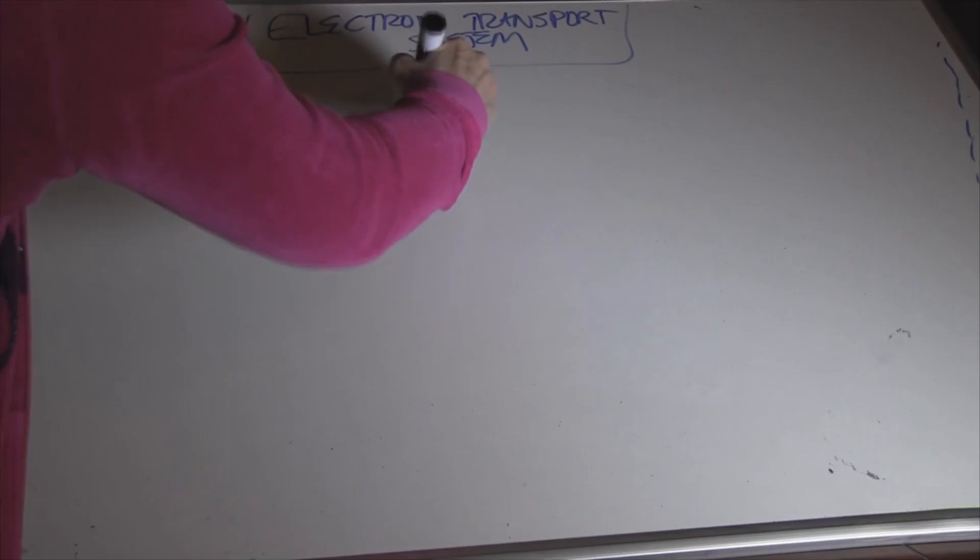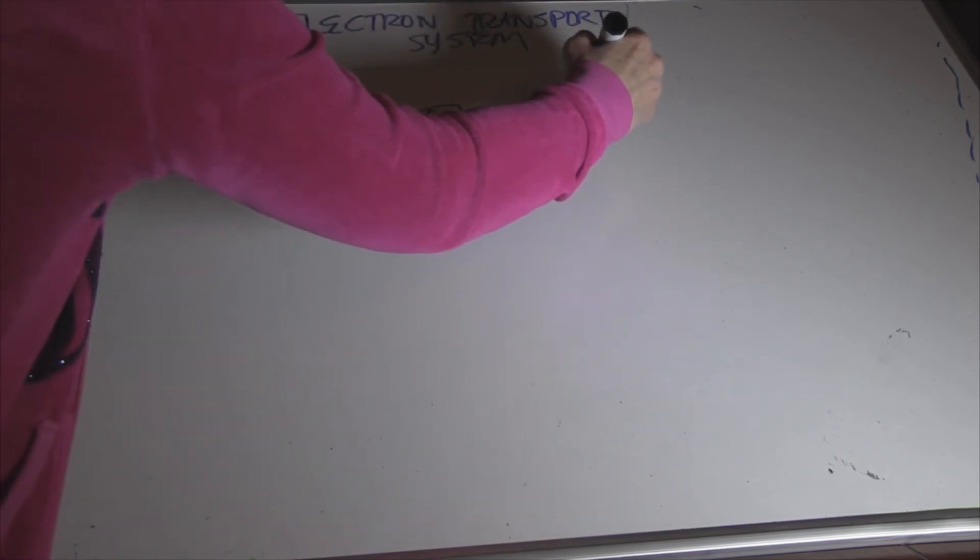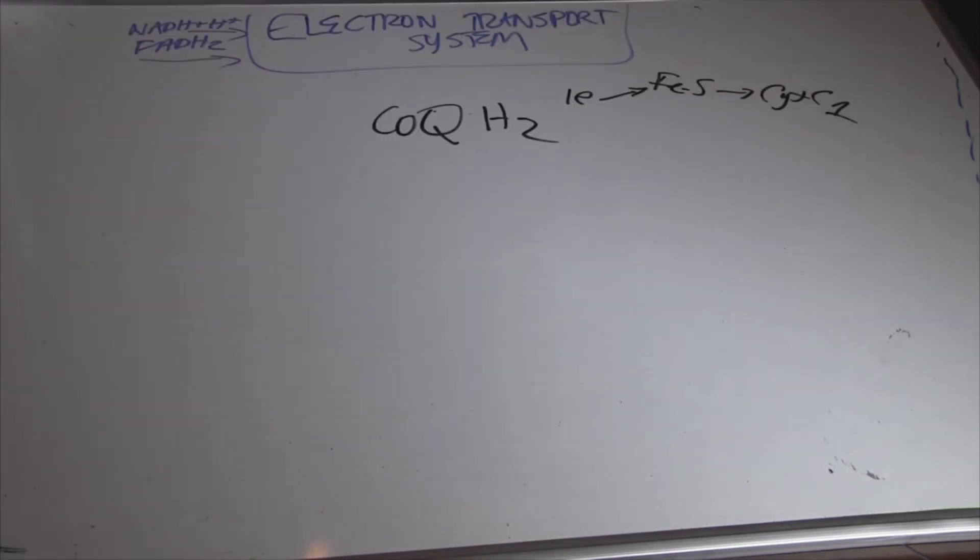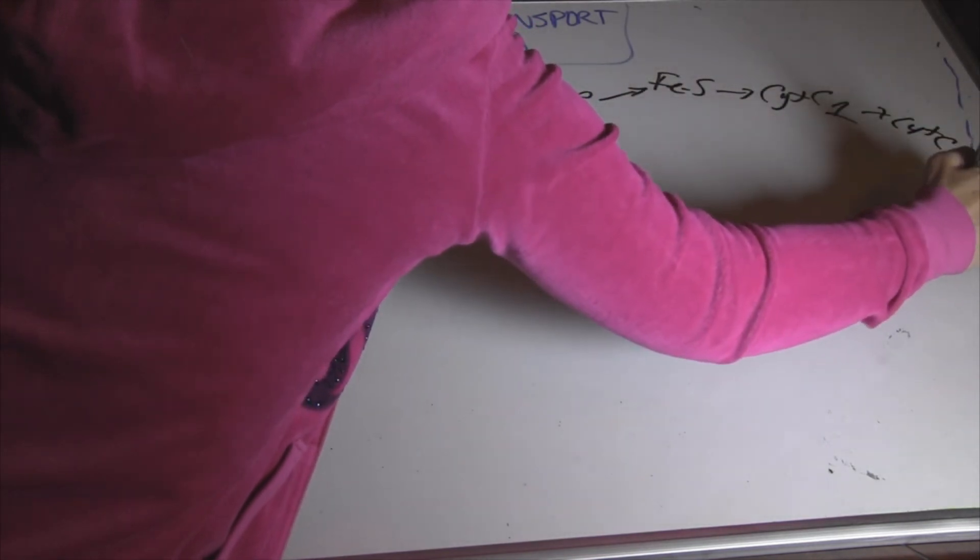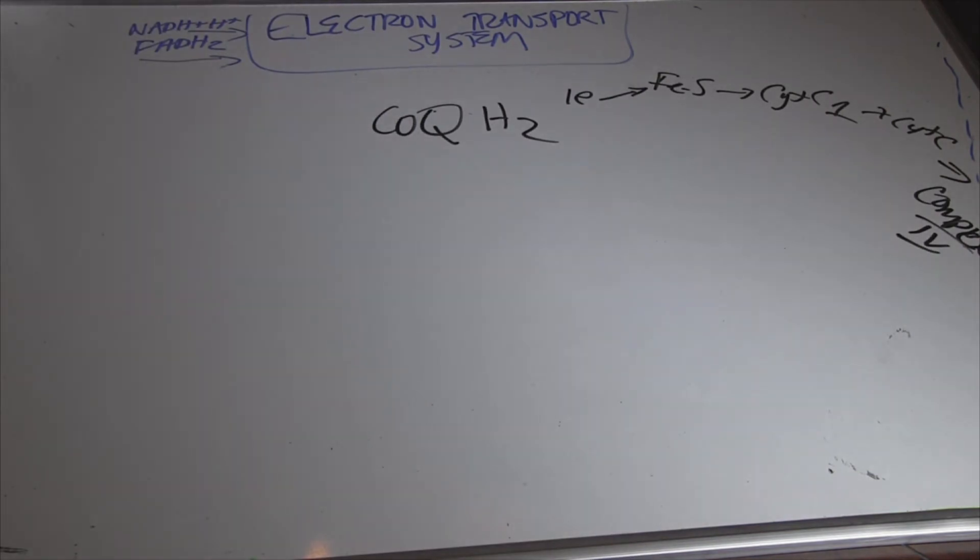So we have CoQH2. As we know, one electron goes to an iron sulfur, goes to cytochrome C1, to cytochrome C to complex 4. That's the direct route.